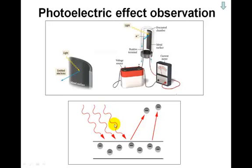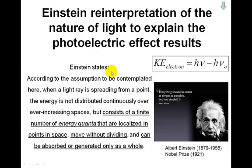To explain this observation, you can't assume that light comes in as a wave. Einstein assumed that light comes as a finite number of energy quanta, as a stream of specific particles, each particle having a particular energy given by hν. These light particles are what we call photons.